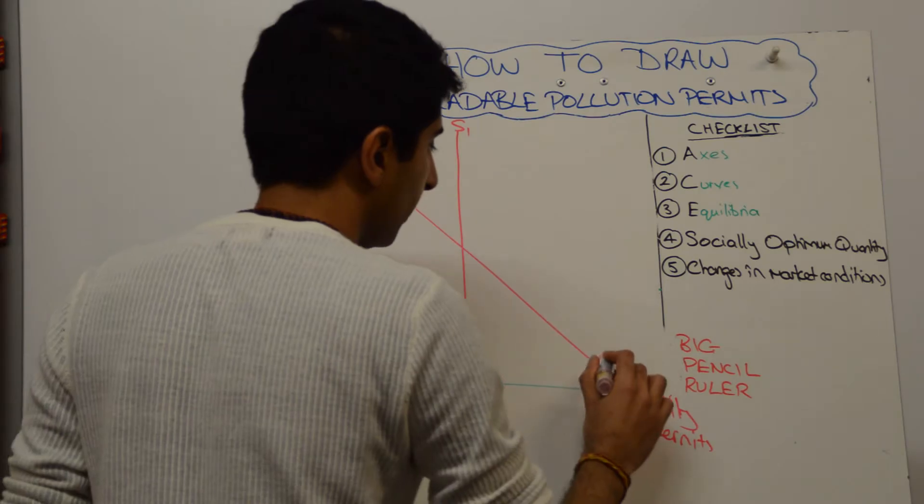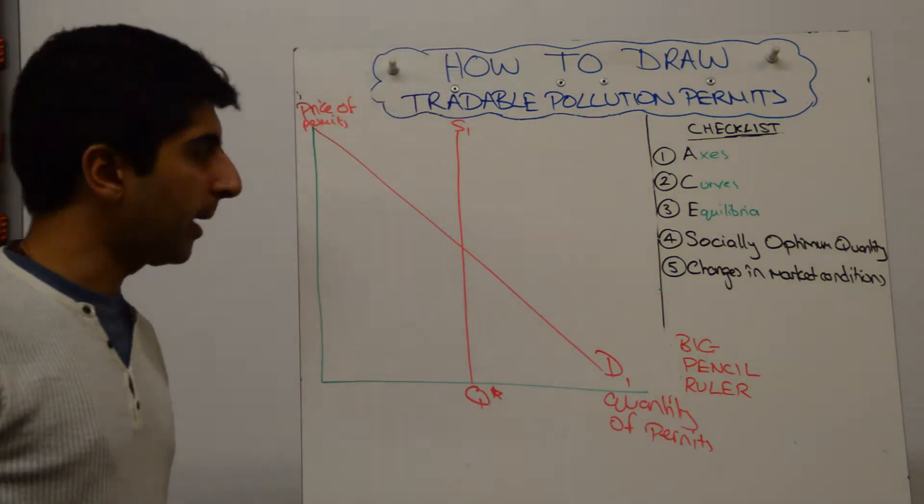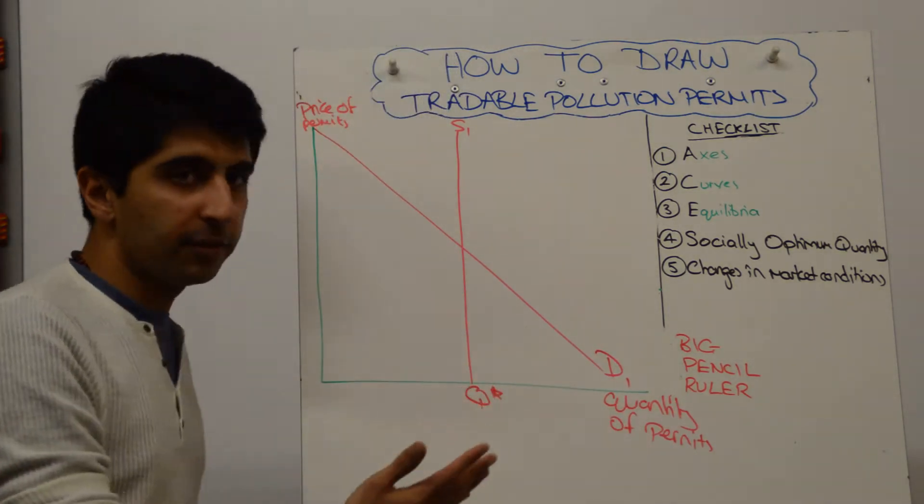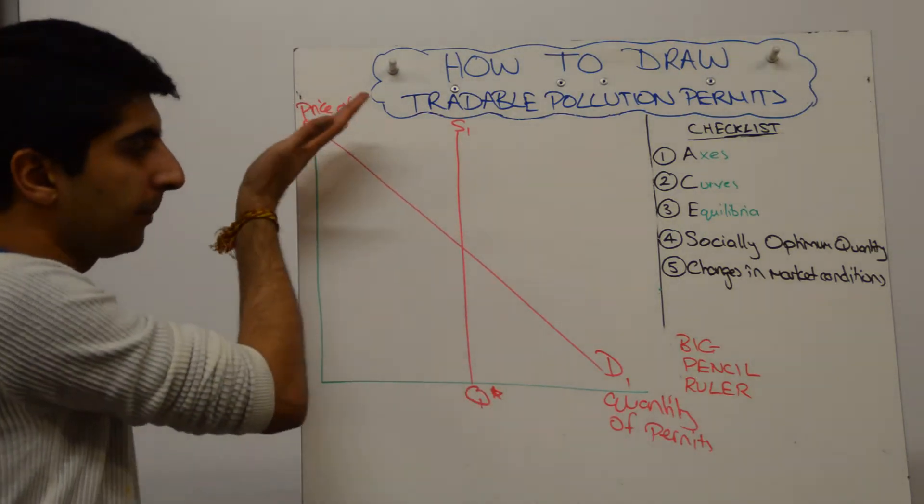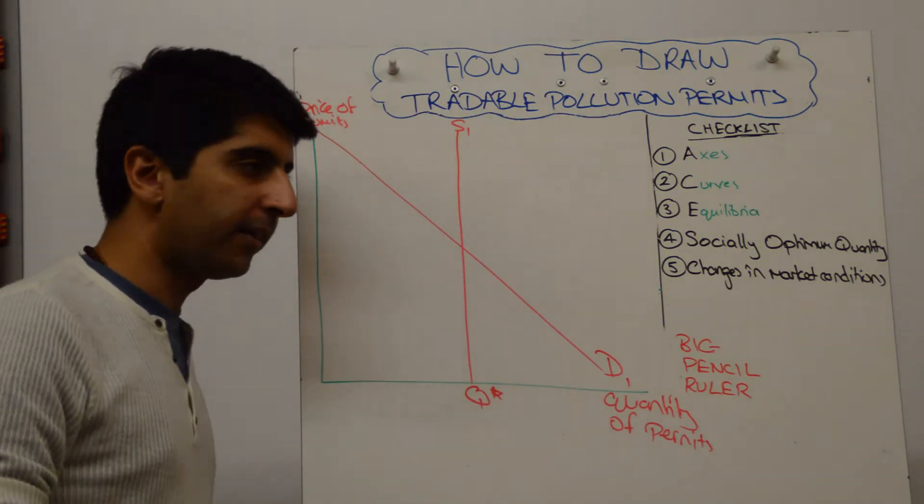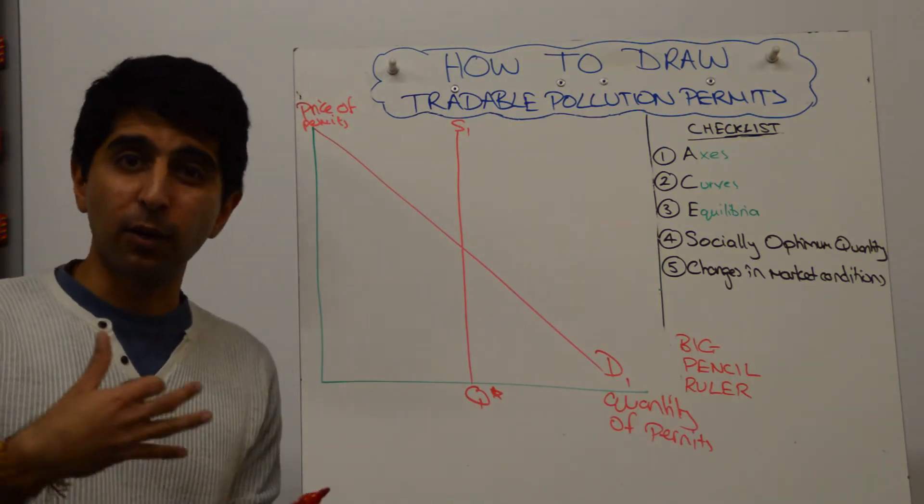There is a normal demand curve, normal downward-sloping demand curve. As the price of permits is lower, there is a greater incentive to buy them. And then, as the price goes up, there is more of an incentive not to buy them, but an incentive to invest in green technology.